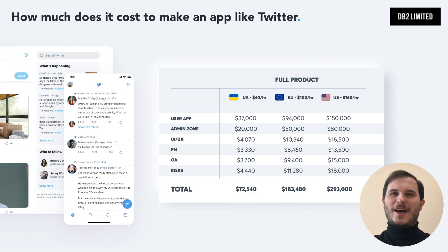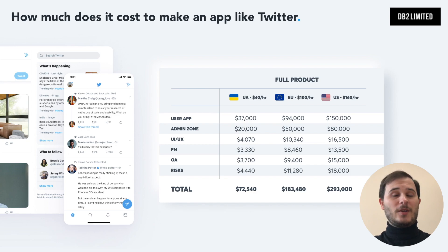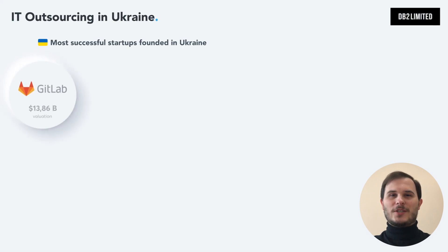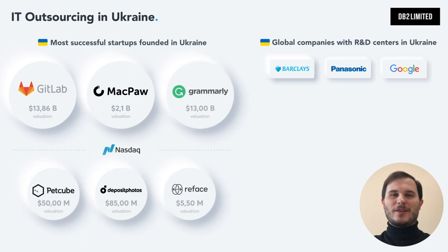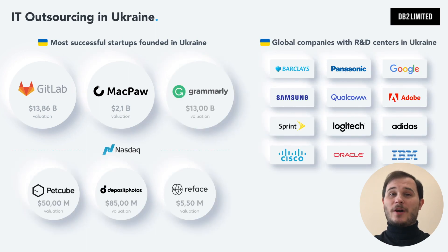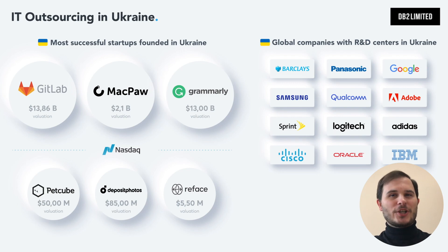Lifehack: if you need an in-house development team because your investor's contract requires it, the social network development costs for an app like Twitter can be found in the US or EU lines. But if you can build it anywhere, you can reduce your expenditures by outsourcing software development to Ukraine without losing quality. Lots of startups are already doing it — companies like GitLab, Grammarly, Jubal, and many more have seen the logic of hiring Ukrainian developers to build world-class software. It's a value for money.